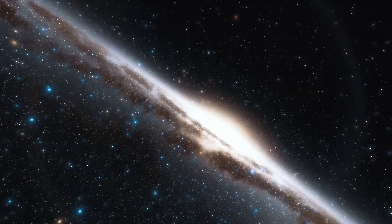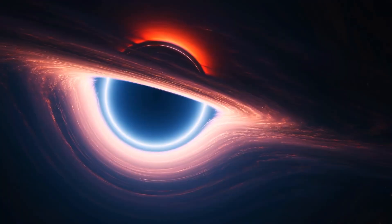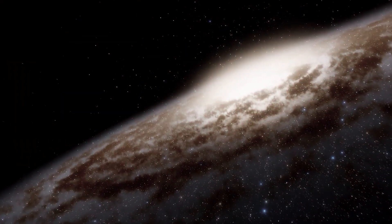Smaller black holes are scattered, typically formed as the remnants of massive dying stars. In contrast, supermassive black holes, boasting astronomical masses ranging from a million to a billion times that of our sun, dominate the cores of nearly all large galaxies.